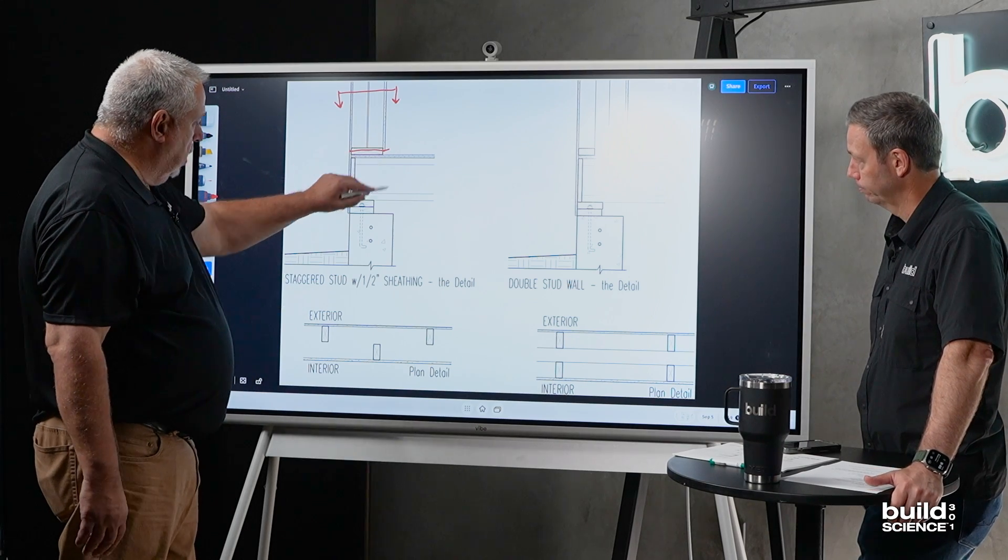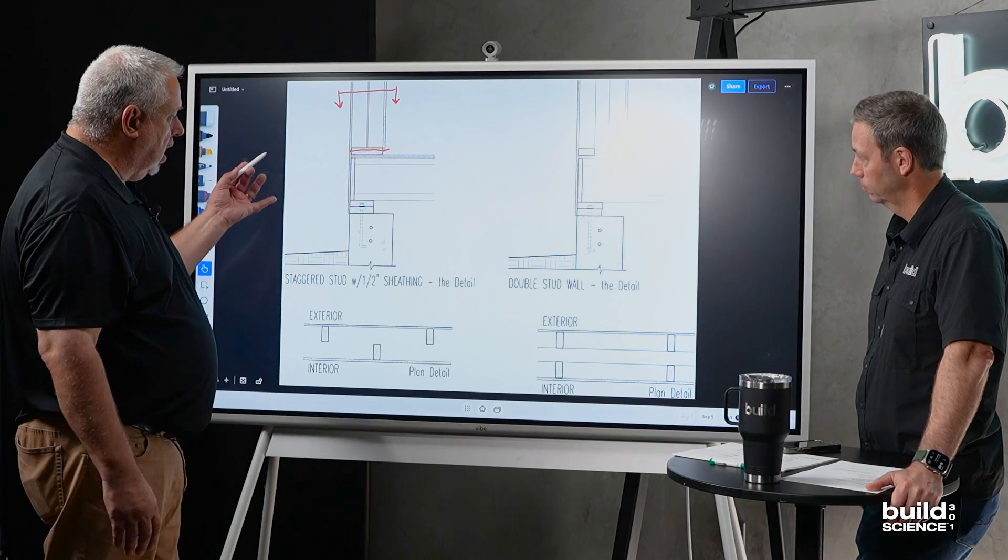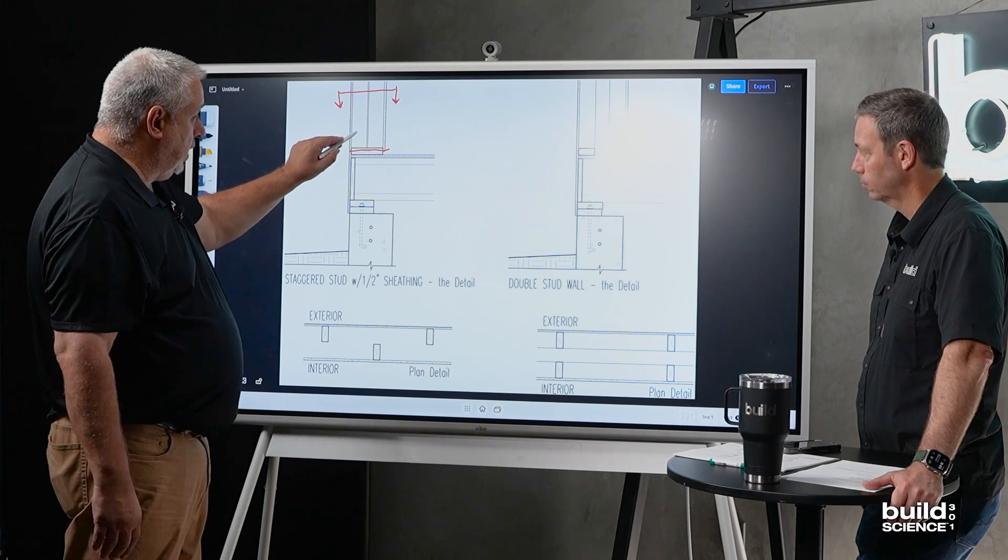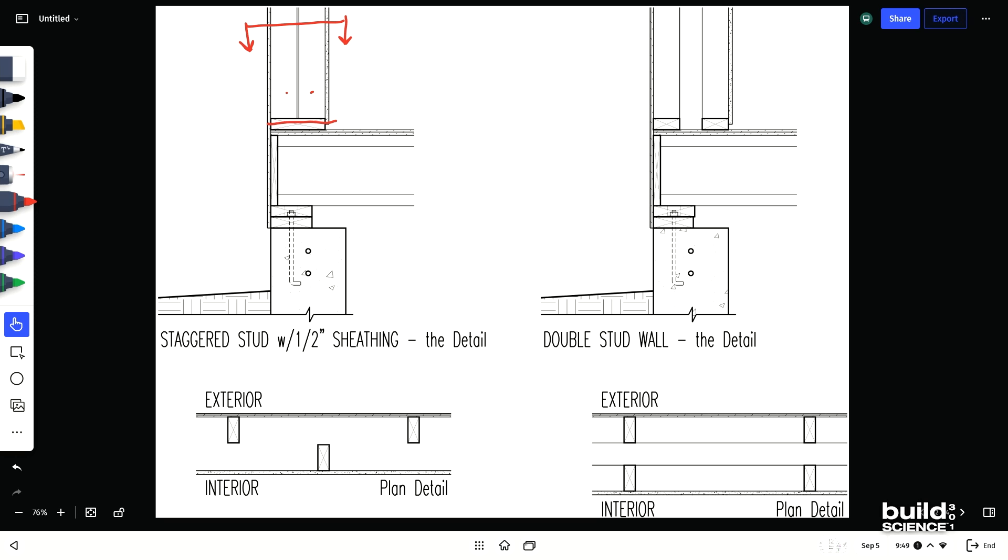Down here, it's very similar to the walls that we just looked at. We just have simple sheathing on the outside because we're relying on that double stud wall for the performance. So we're not putting it on the outside.